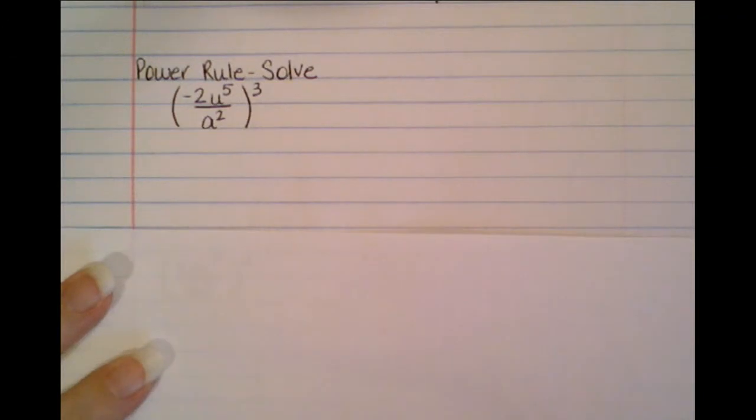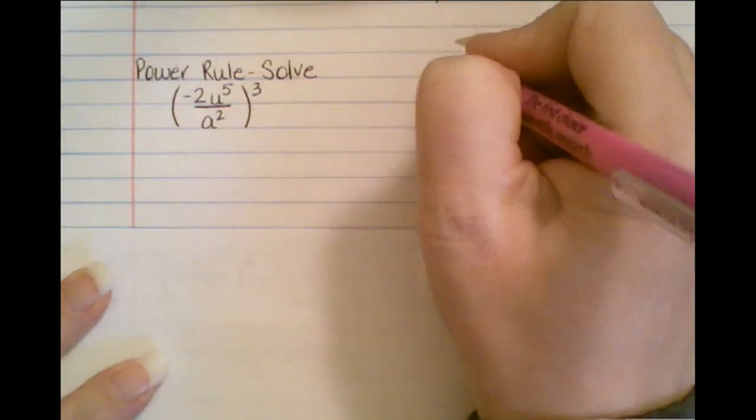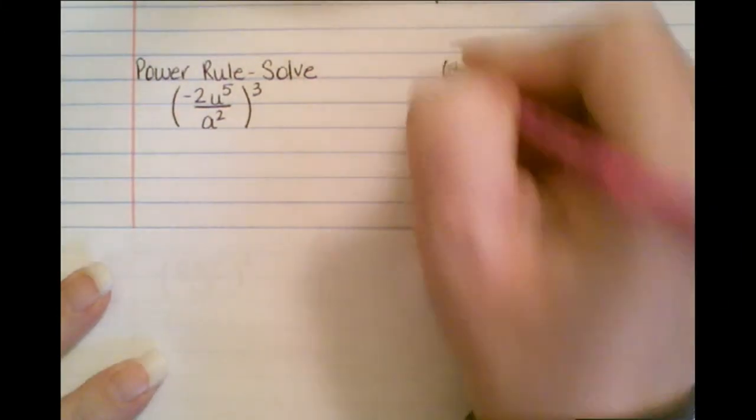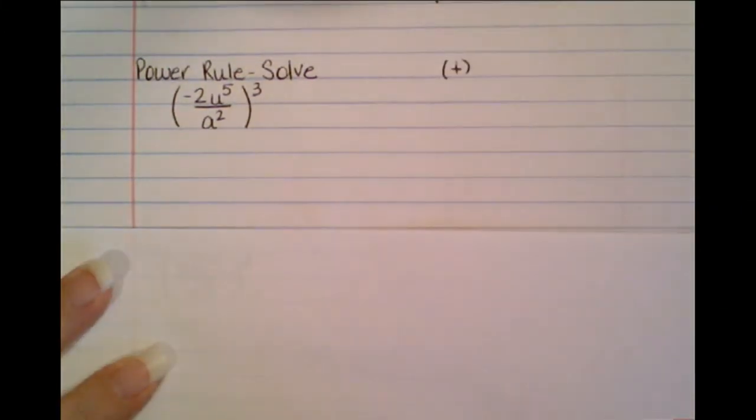We want to look at how to use the power rule in order to solve these equations and simplify them. When you simplify, all of your exponents should be positive in your final answers.